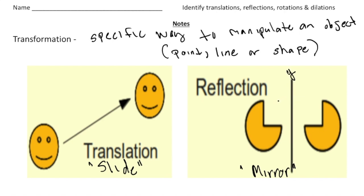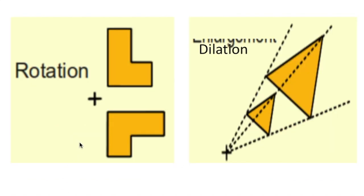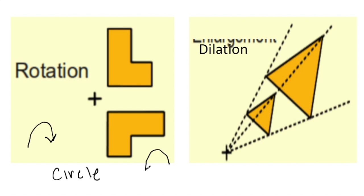The next type of transformation is called a rotation, and the keyword for this one is circle. When an object is rotated, it can normally go clockwise or counterclockwise. I'll get into that more later on.